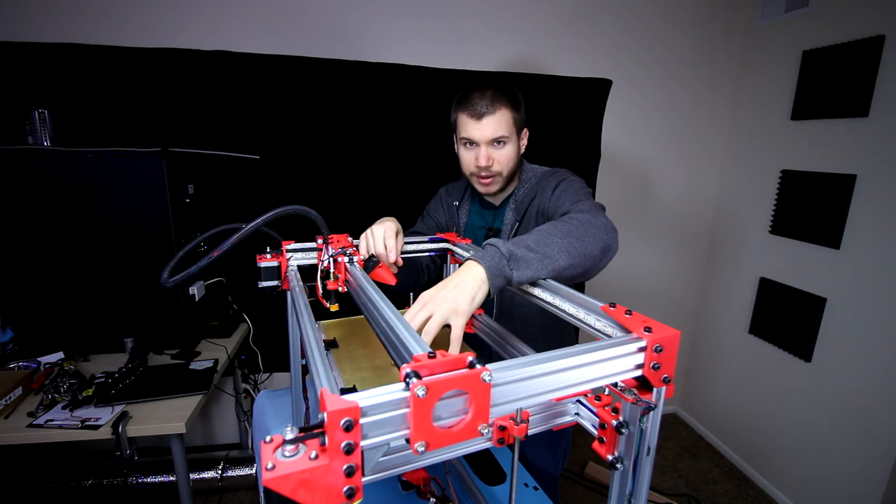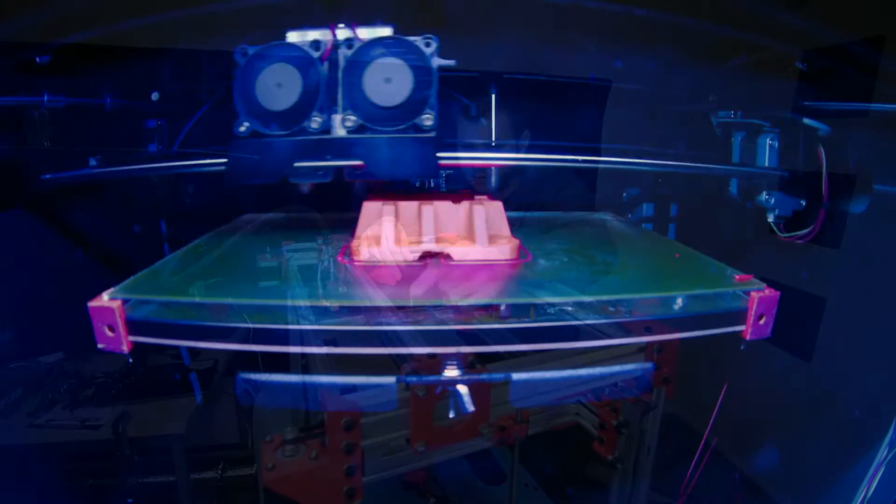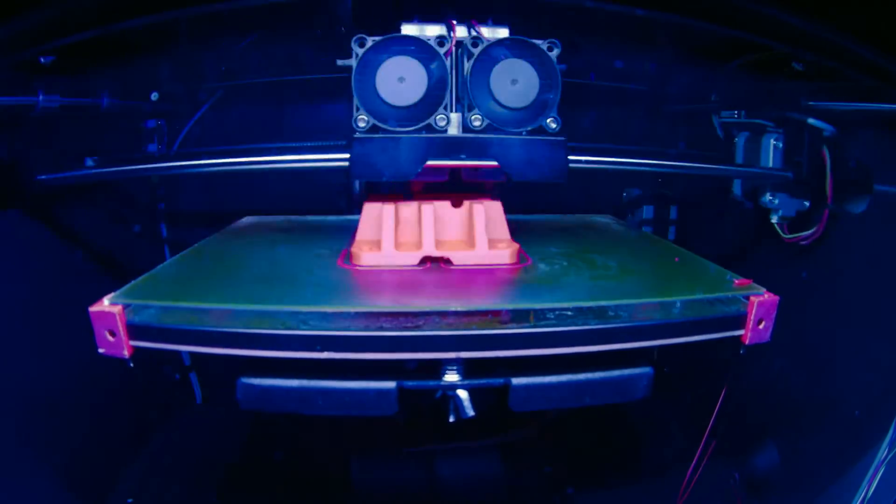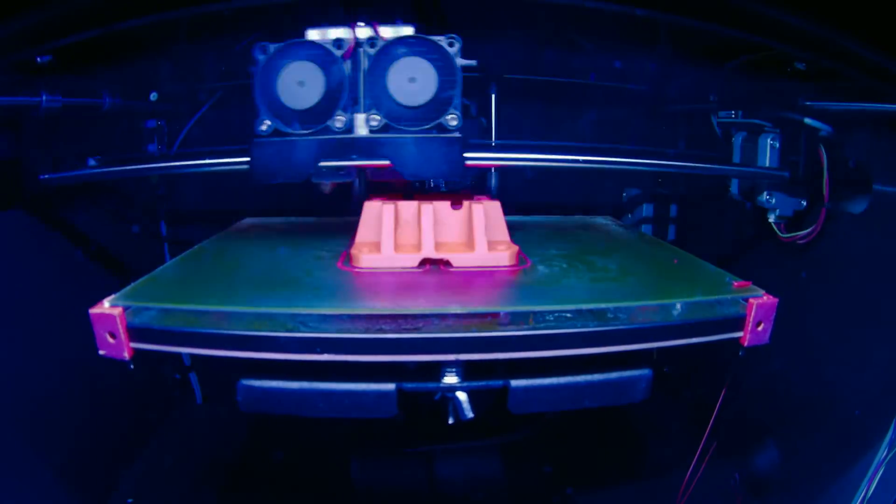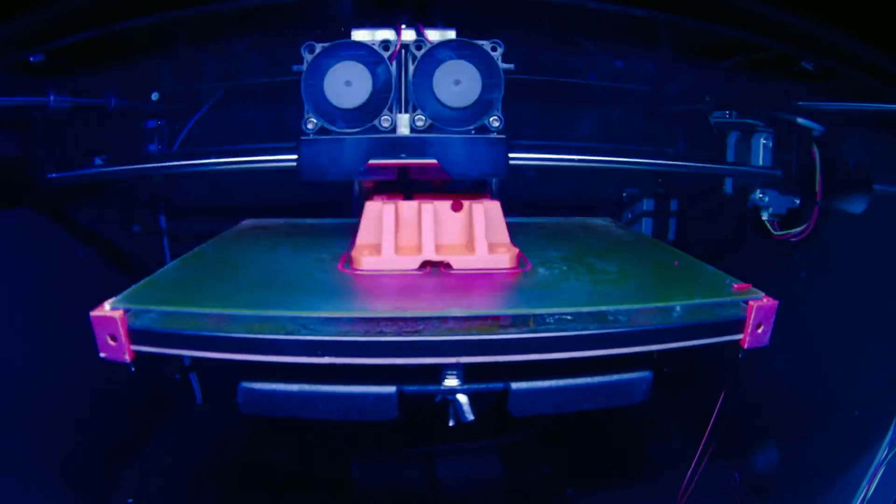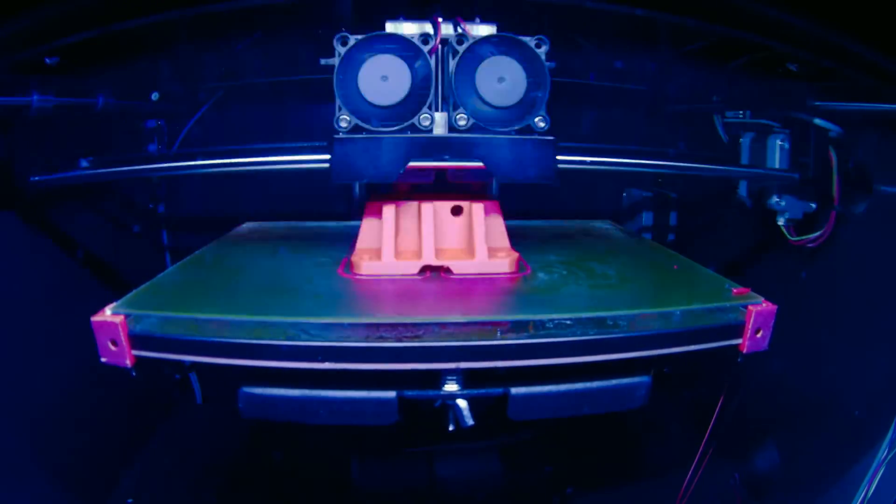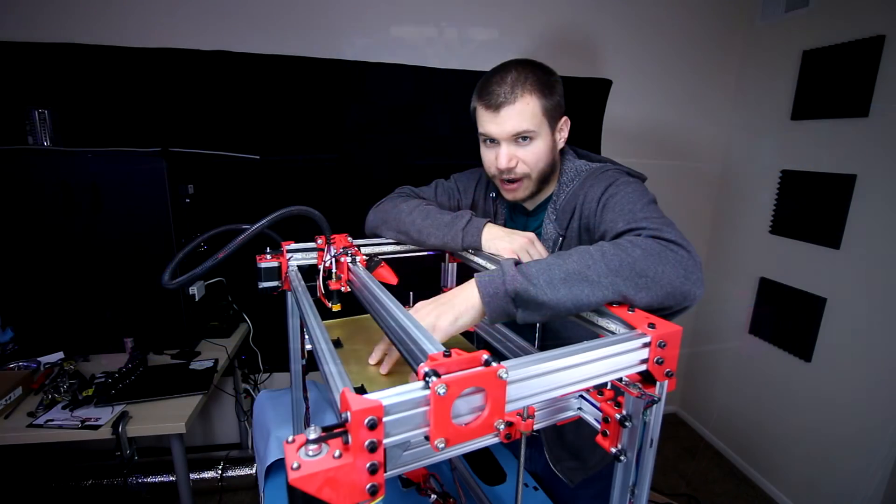So there you go folks, that is how you install a PEI bed surface. I'll go ahead and roll a few clips of it actually in action with some previous time lapses. You want to set the bed around 110 degrees Celsius if you're printing with ABS.